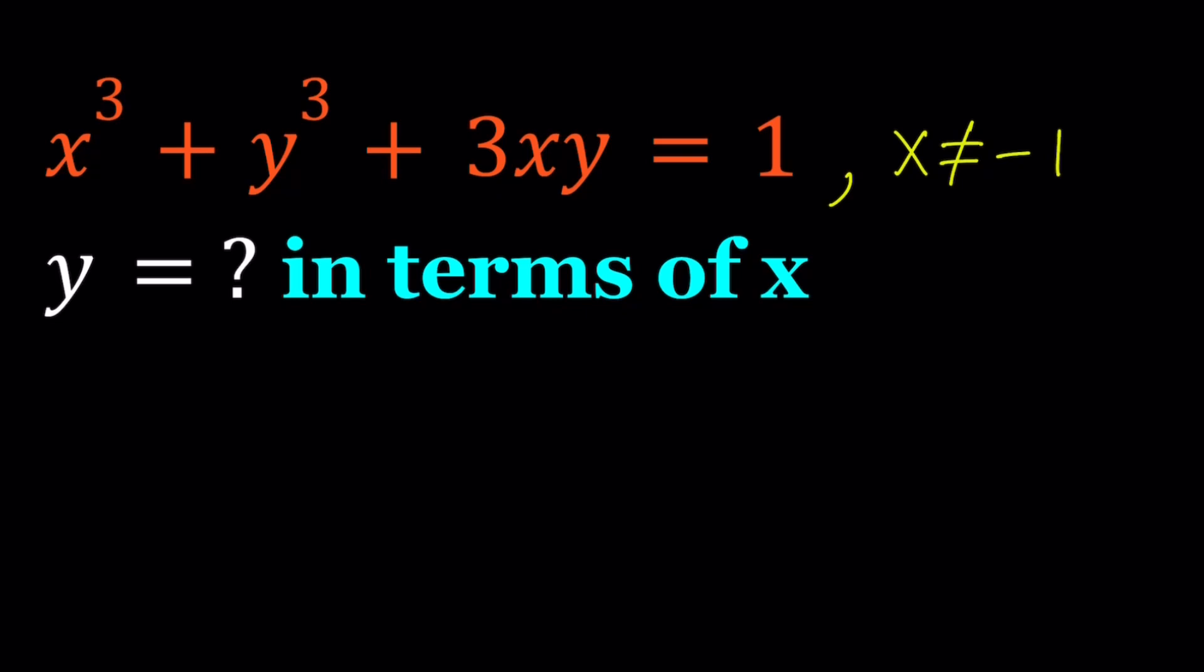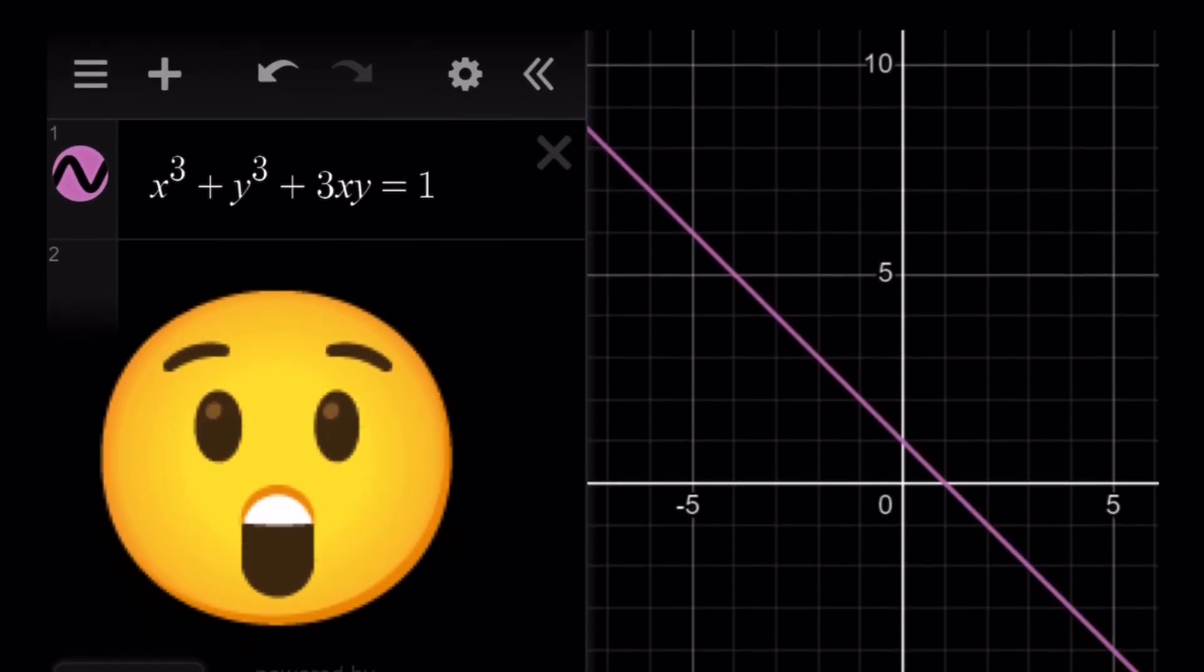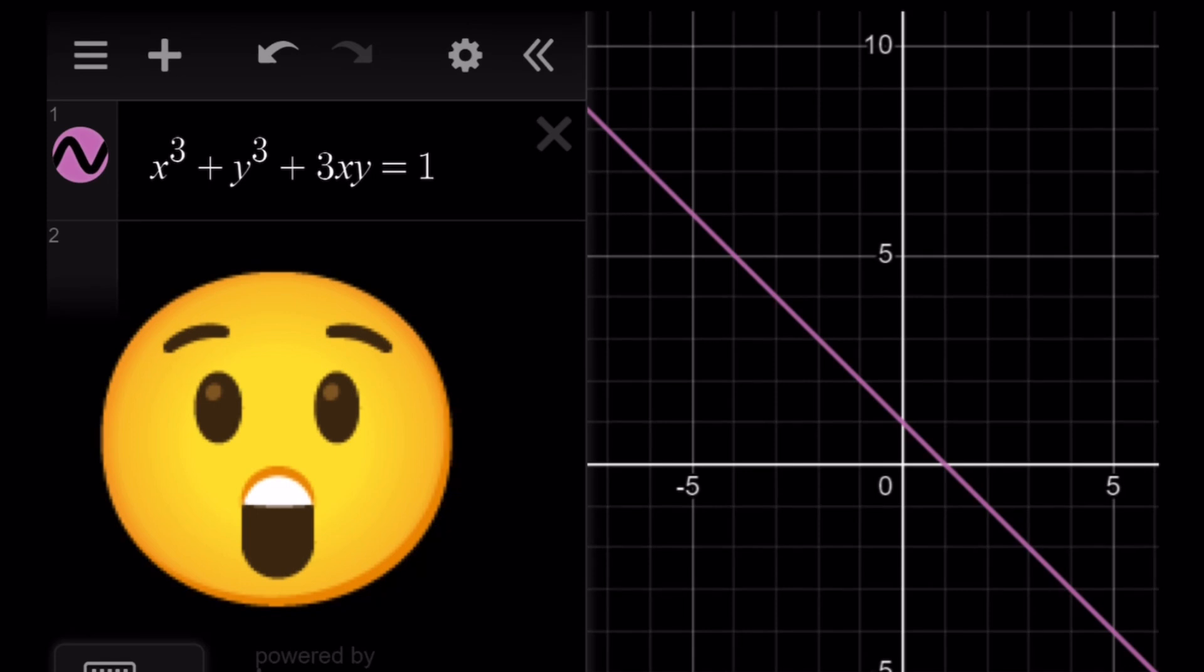Let's take a look at the graph of this cubic equation first. When you check out the graph, you're like, uh-oh, what is going on here? Aren't we supposed to get a curve, like cubic? Why is this linear? Let's see what is going on.